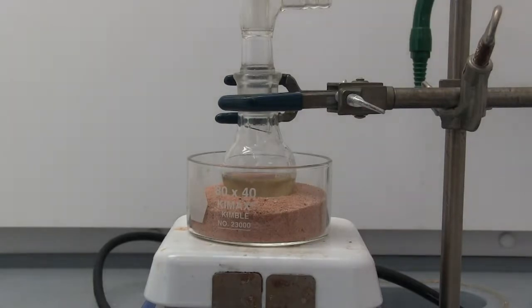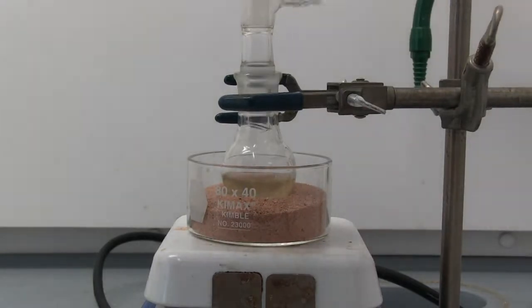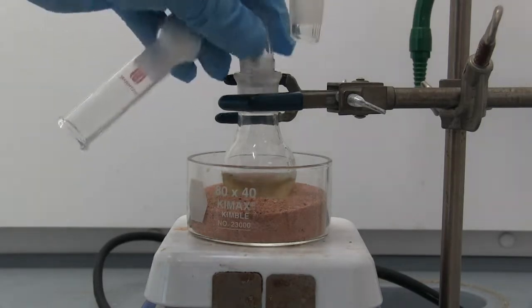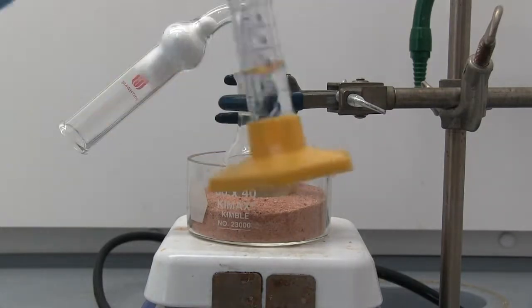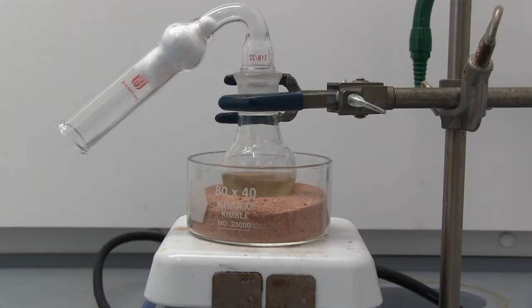All right, so I'm going to take off our water condenser and bring our drying tube back to here. And now I'm going to slowly acidify it with 3 milliliters of 3 molar hydrochloric acid and we're going to let it stir while it's, keep it stirring while it's going.